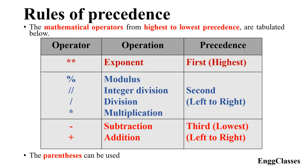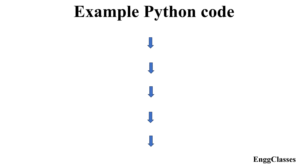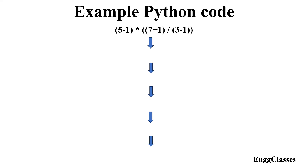Parentheses can be used to override the usual precedence. Now we consider an example in Python code: (5 - 1) * (7 + 1) / (3 - 1). This expression has many mathematical operators — subtraction, multiplication, addition, division, and subtraction again.